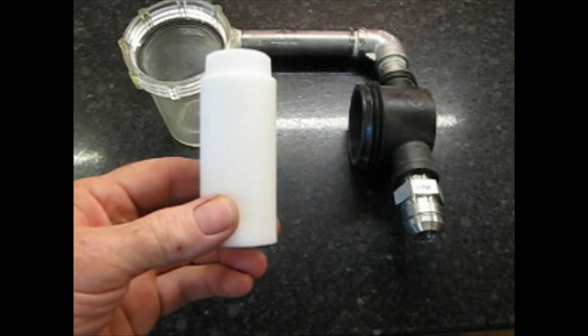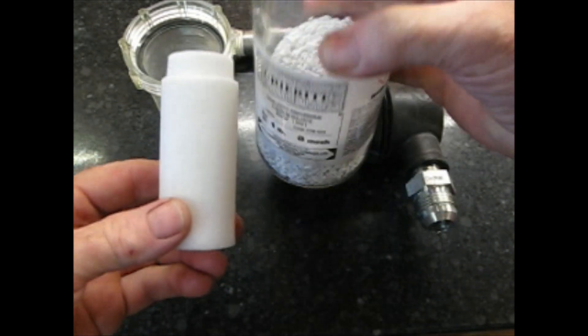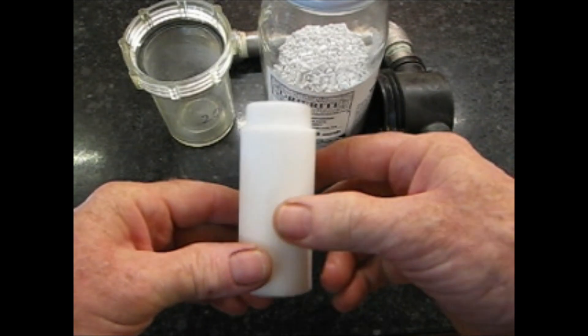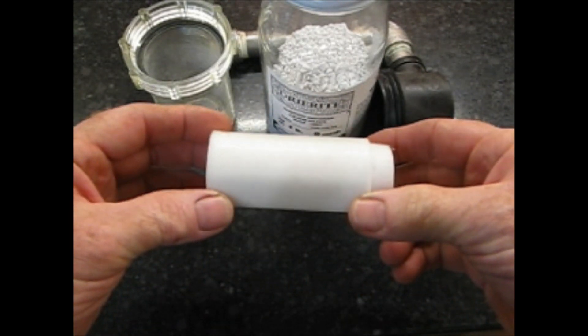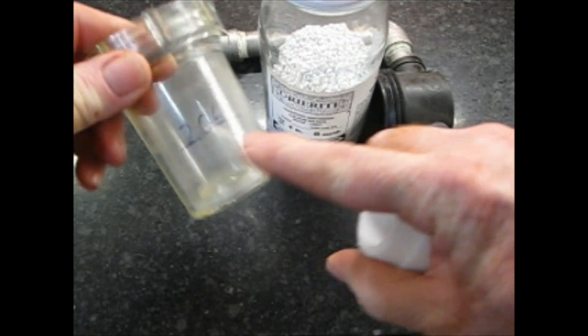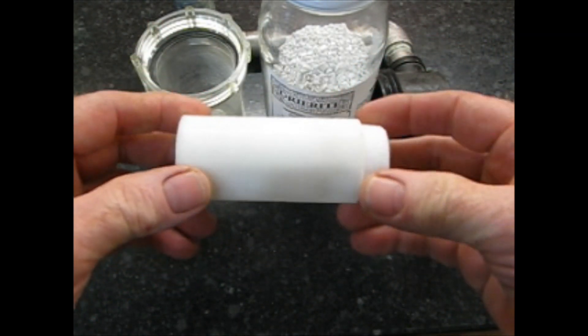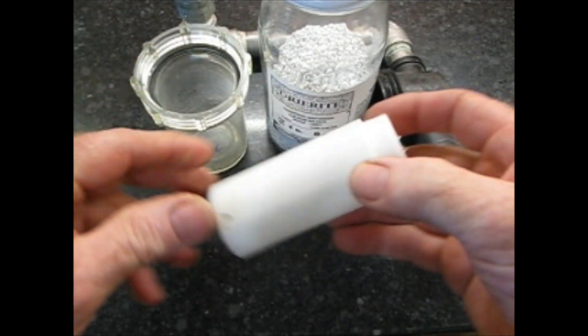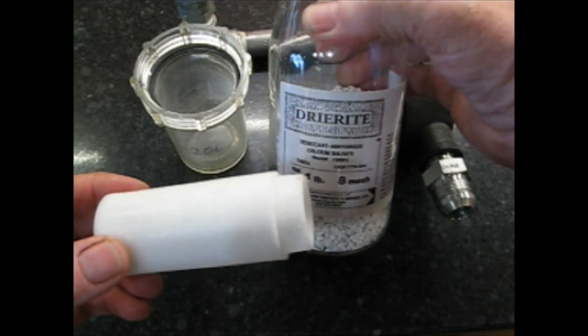So I tried desiccant. I took desiccant and filled it up inside of here, and I weighed the filter chamber. The filter weighed 206 grams. After about 10 loads, I weighed the chamber again and it weighed 206 grams. So the desiccant wasn't working.